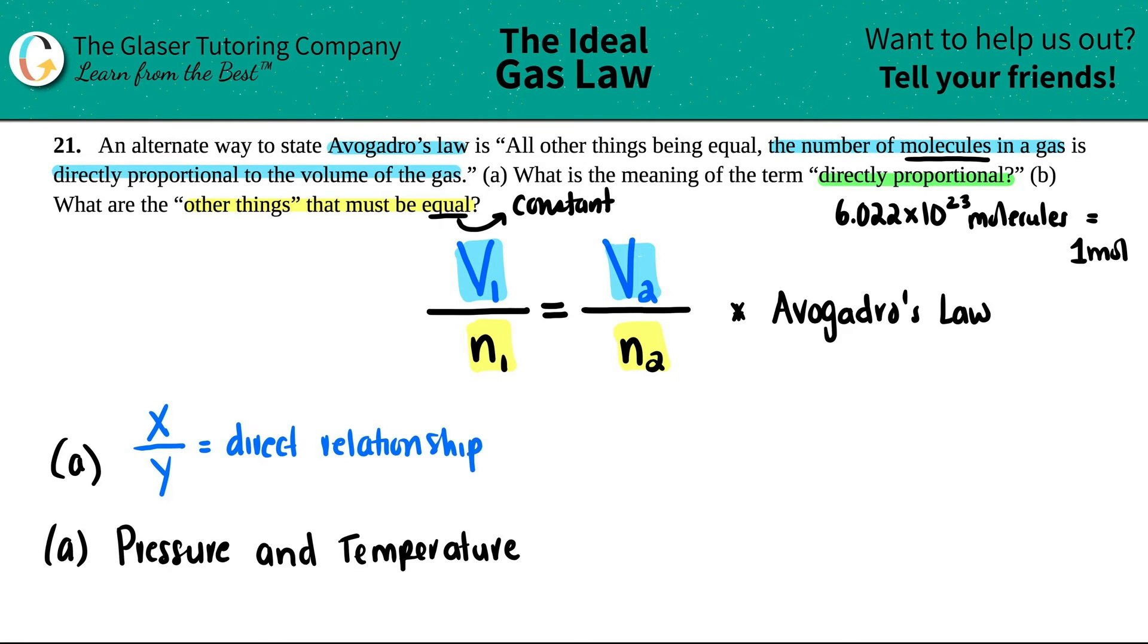So that means that if I have to increase the amount of one variable on the top, to counteract that, I would also have to increase the number on the bottom. And then the same thing, if I have to drop the volume or the variable, in this case, the volume on the top, I would have to drop the variable on the bottom. So that's what a direct relationship means.